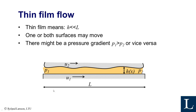Everything is about thin film flow. When I say thin film, I mean that the film itself is much, much thinner than the length of it. Normally we denote the thickness by H and the length by L, so H is very much smaller than L — maybe 100 times or 1000 times smaller.